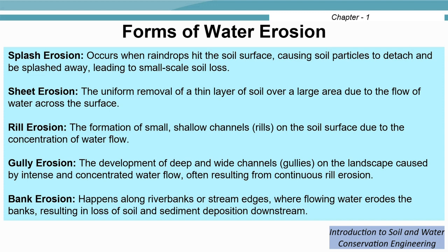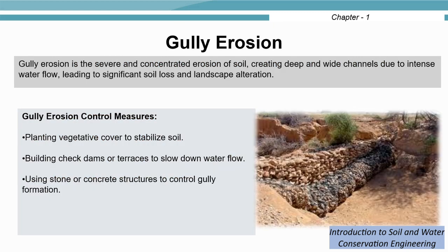Bank erosion happens along river banks or edges of streams, where flowing water erodes the bank, resulting in loss of soil and sediment deposition downstream. Gully erosion is the severe and concentrated erosion of soil, creating deep and wide channels due to intense water flow, leading to significant soil loss and landscape alteration.